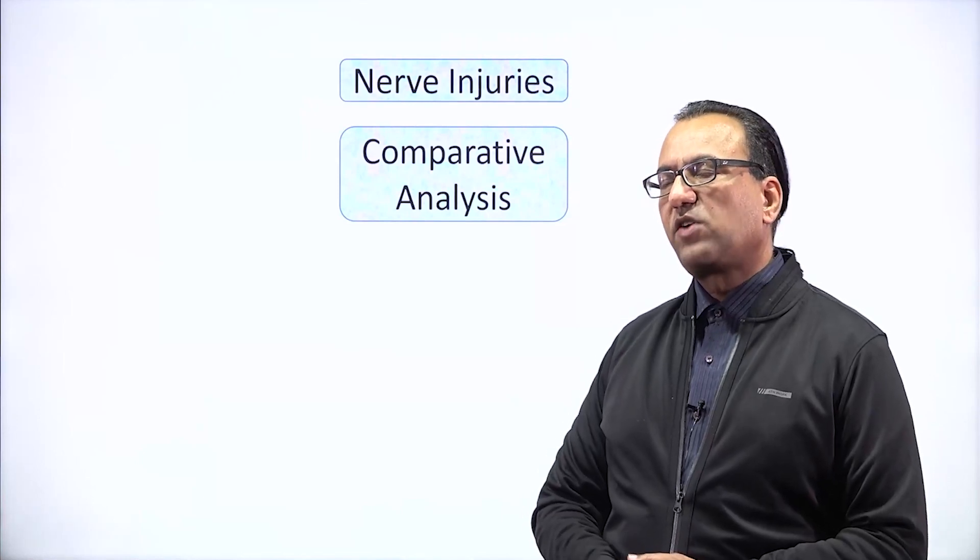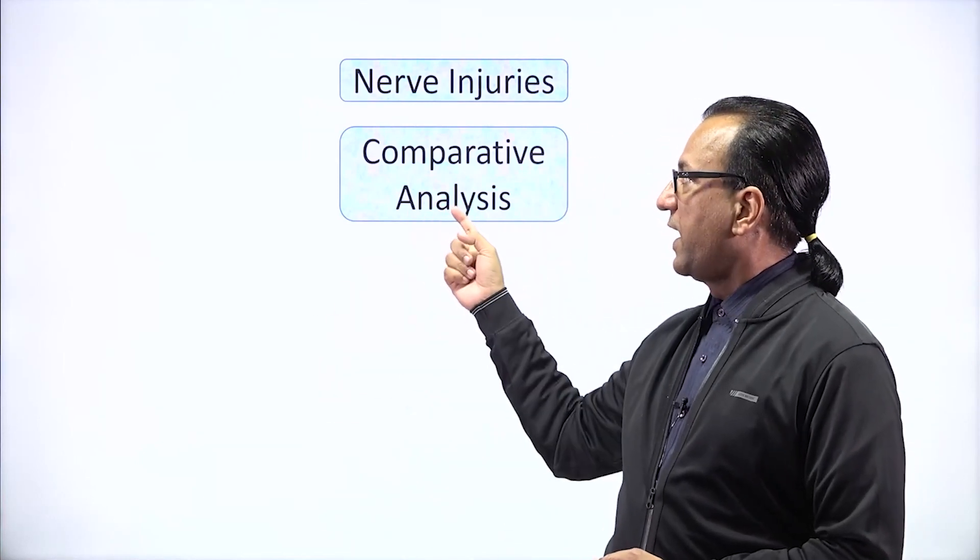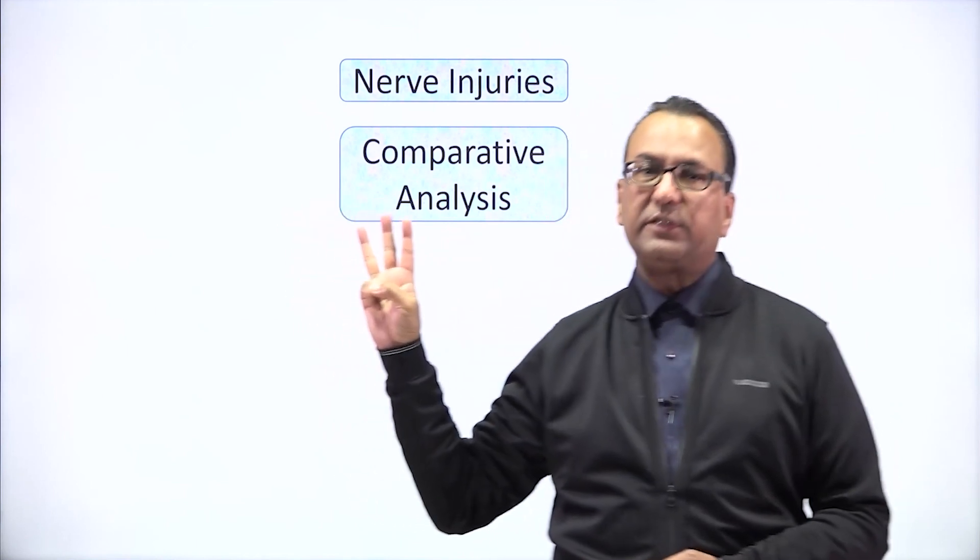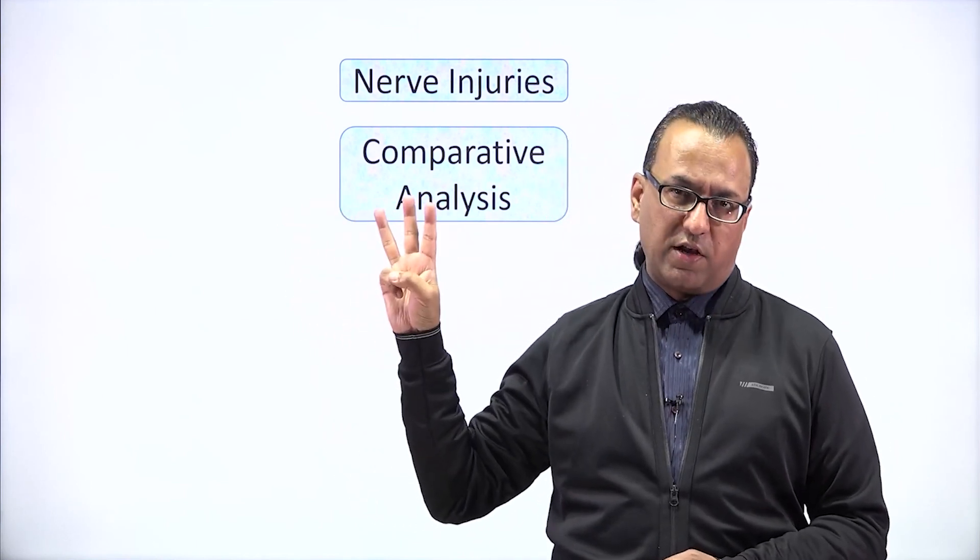When we do the comparative analysis of the nerve injuries in the hand, we'll be discussing three cases: median nerve injury, ulnar nerve injury, or the radial nerve injury.